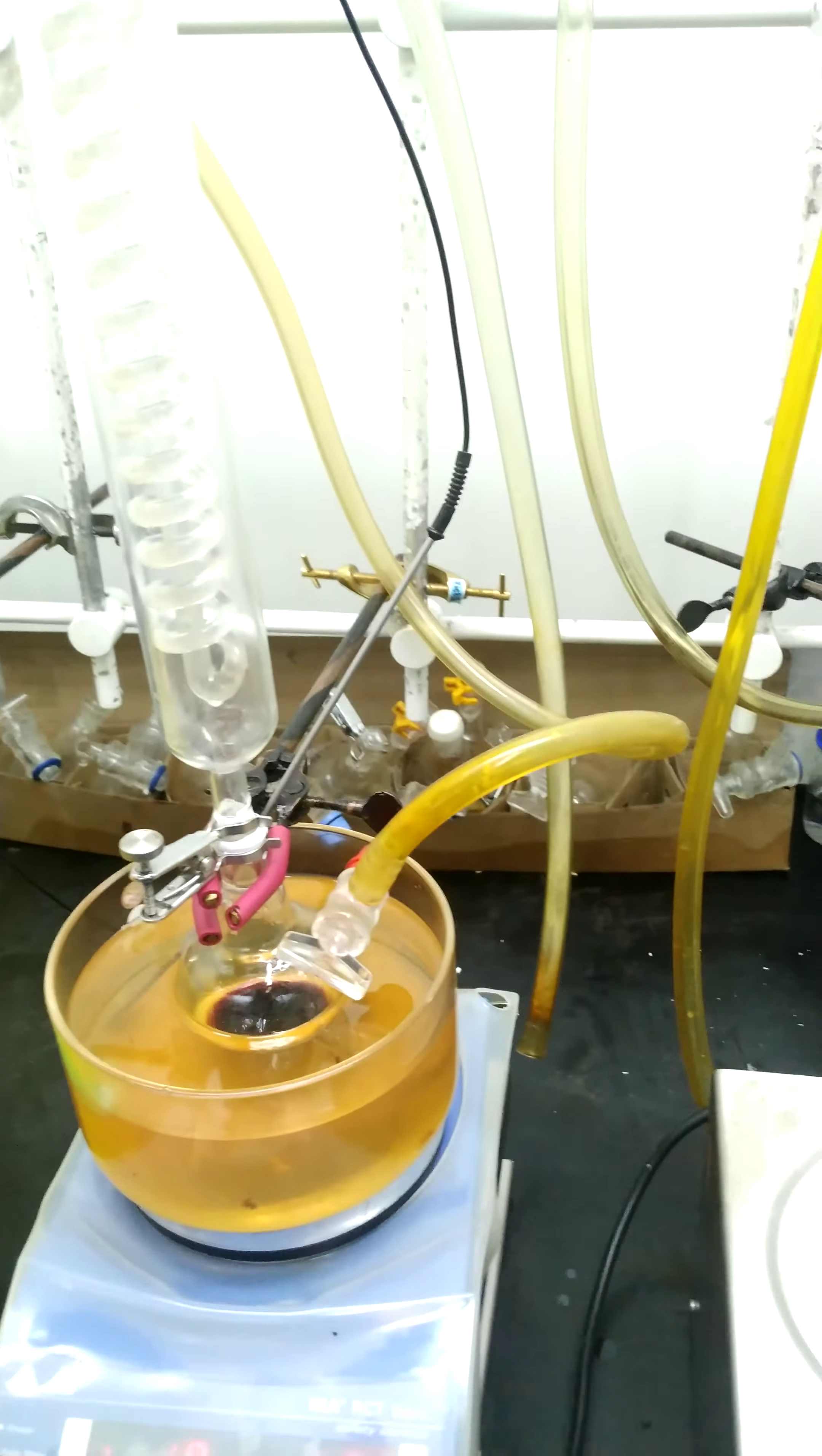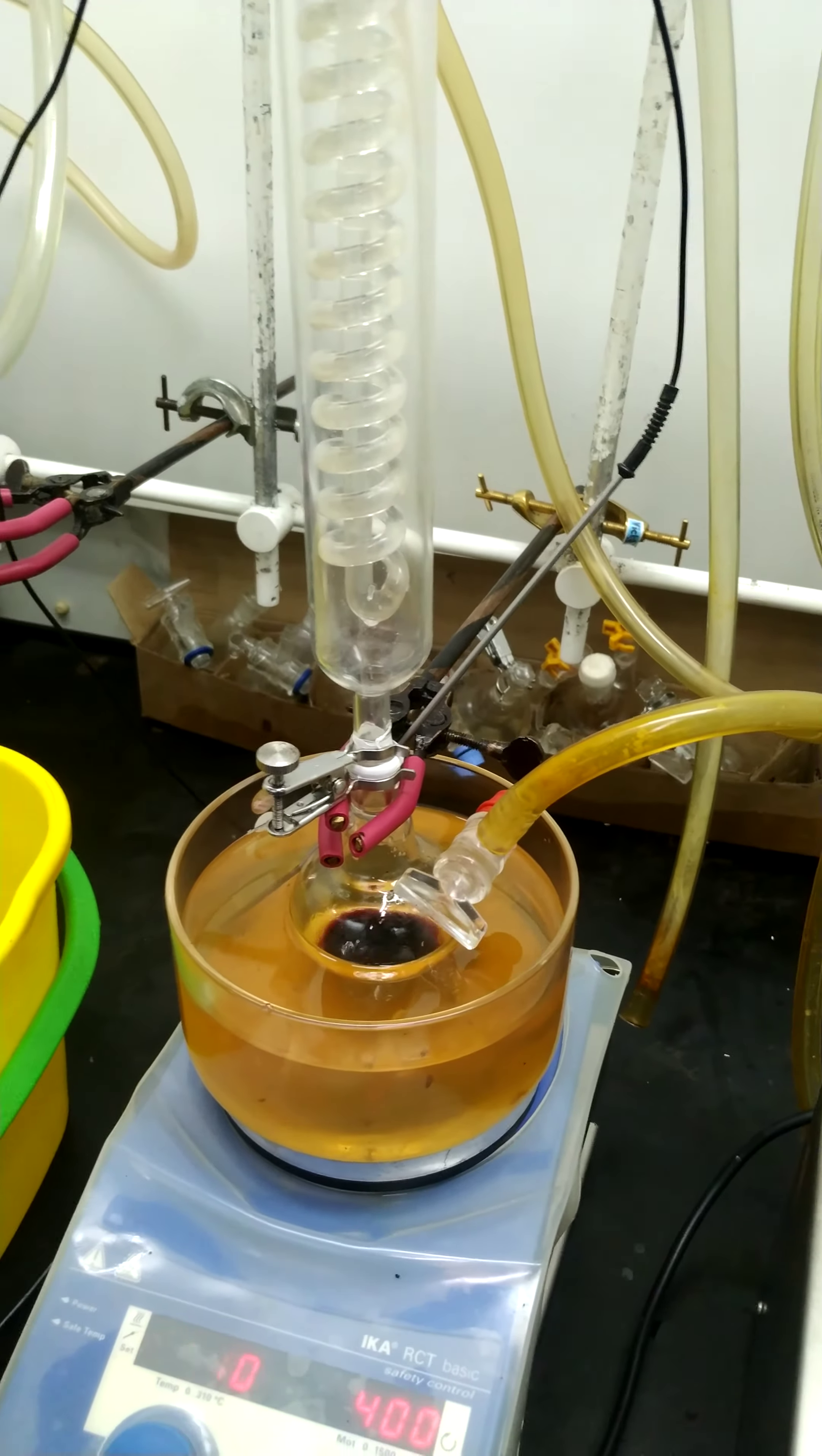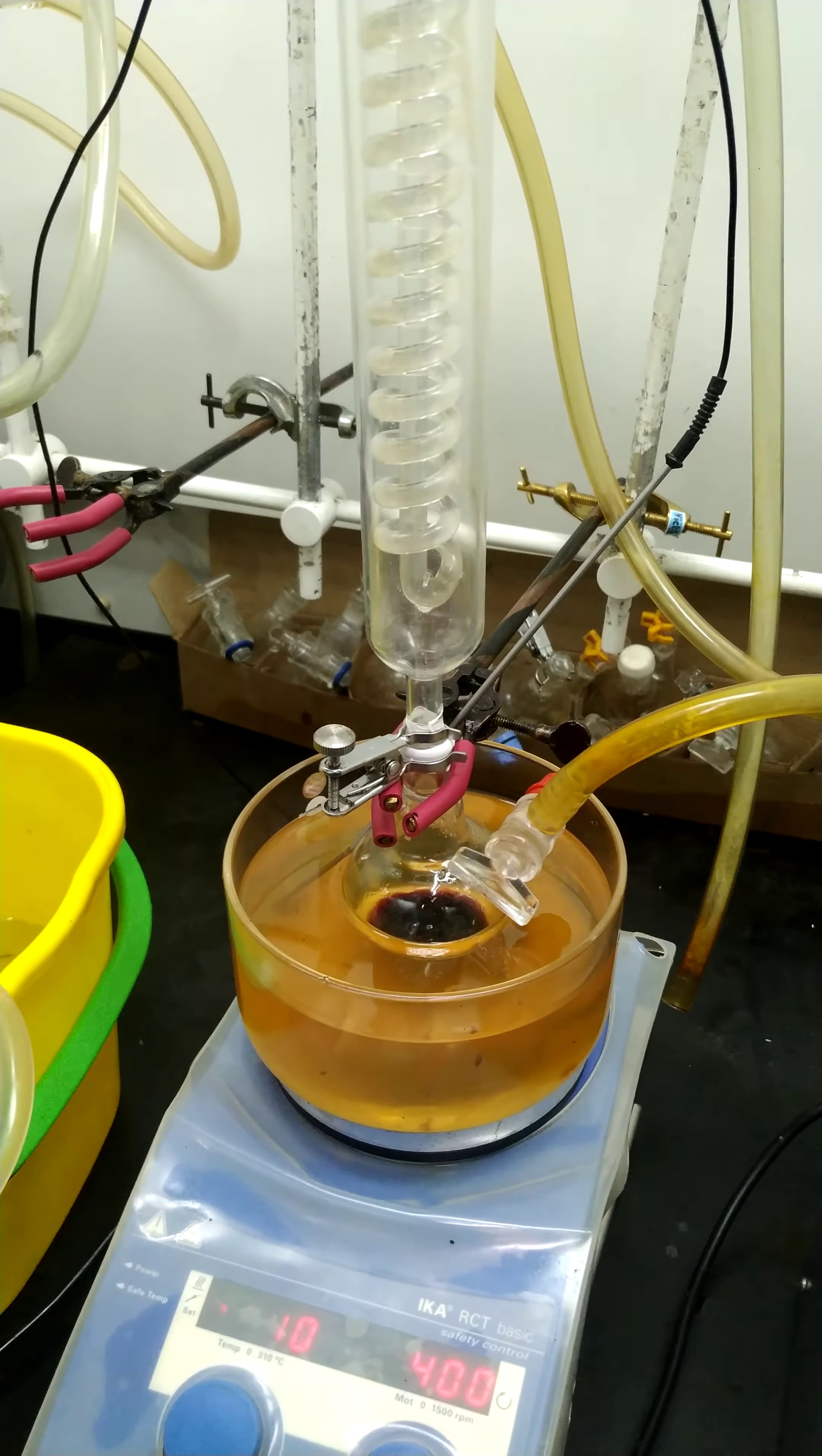The schlenk flask is fitted with a condenser, and these solvent vapors get condensed and come back to the reaction mixture. In this way, loss of solvent is prevented. This is why we do reflux reactions.